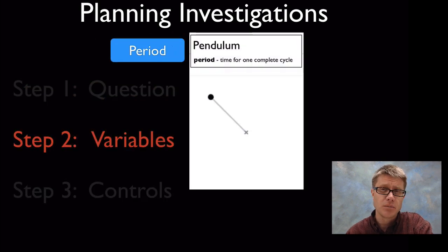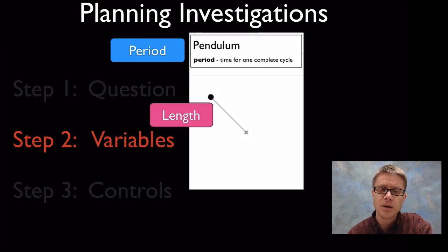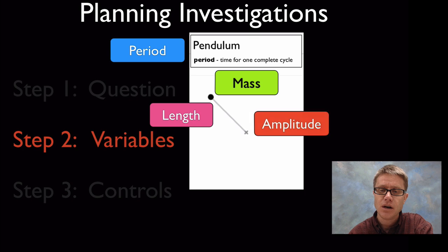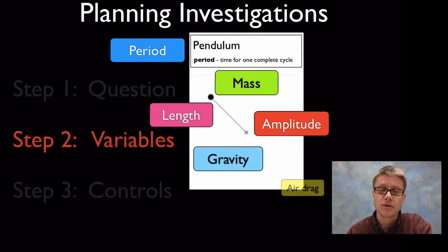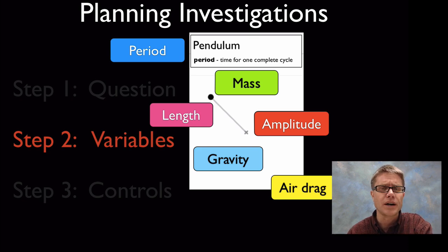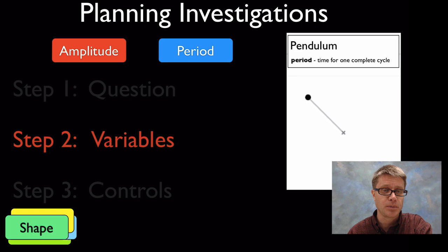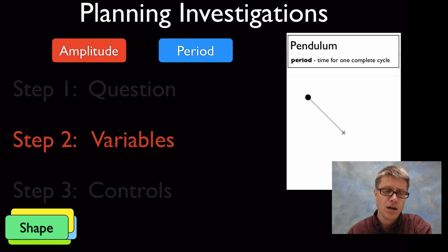We then move on to variables. What could affect the period of a pendulum? I want to brainstorm as many ideas as I can: maybe the length of the pendulum, how far it is from the pivot point; maybe the mass; it could be the amplitude — that angle away from vertical; maybe gravity or air drag. I want to come up with one good variable I can vary. Let me choose amplitude — how high I release the pendulum — as the thing that's going to affect the period. I'll hold on to all the other variables for a moment.